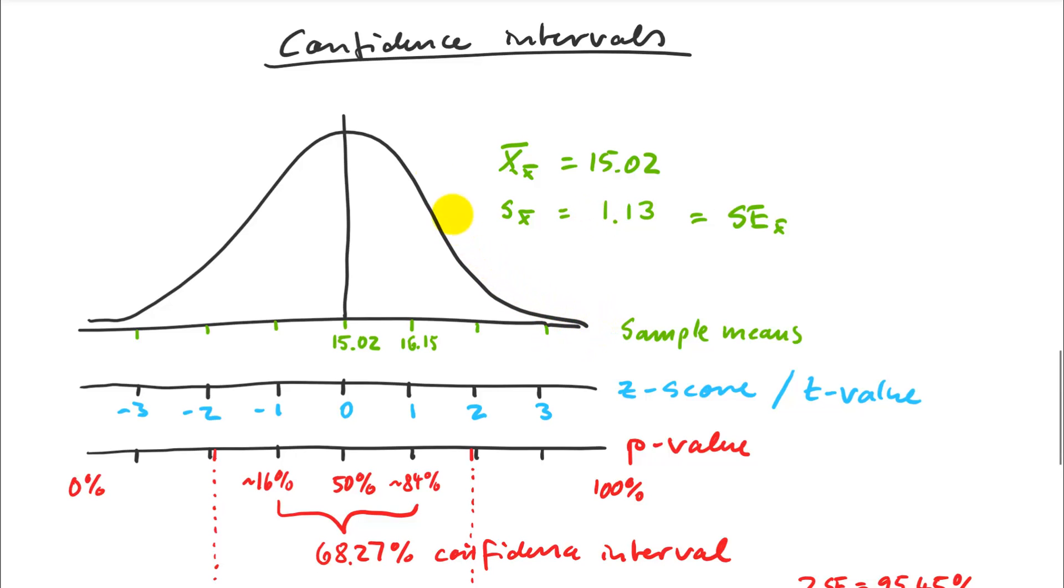I can plot this out in my histogram of my means in multiple runs as the mean of 15.02 here. And then I add one standard error to get to the mean plus one standard error. I add another 1.13 to get to the mean plus two standard errors. And I subtract to get to the other numbers here. So this is a histogram with original units of my sample means.